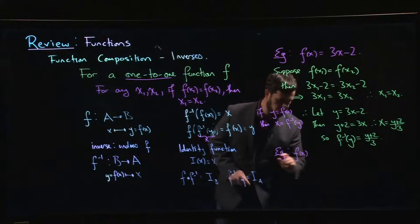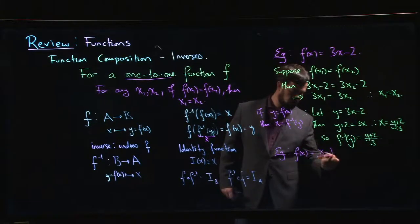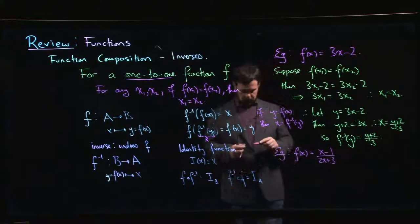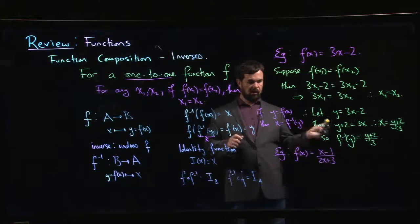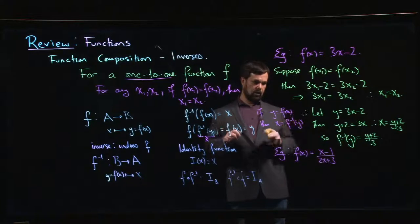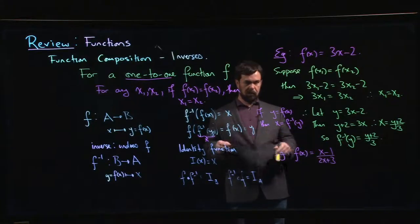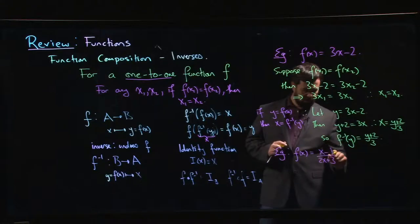Let's go with x minus 1 over 2x plus 3. Okay. I'm going to leave it as an exercise to confirm that this is indeed a one-to-one function. It's not so bad. There's a little bit of work involved. You've got to cross multiply. It's doable.